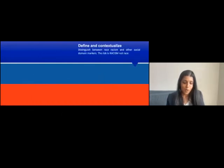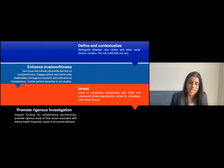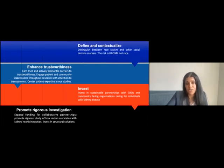To sum up, moving forward we should strive to define and contextualize race, racism, and other social domain markers, remembering the risk for disease is racism not race. We should enhance trustworthiness, involving making sure patients and community stakeholders are part of our research. We should invest in partnerships with community-based organizations, promote rigorous investigation through funding mechanisms, and invest in structural solutions.